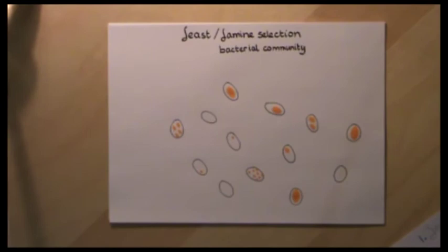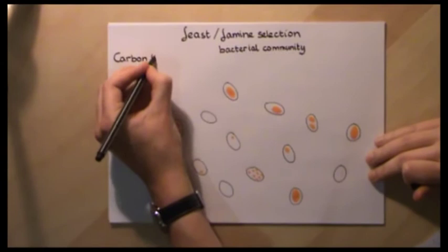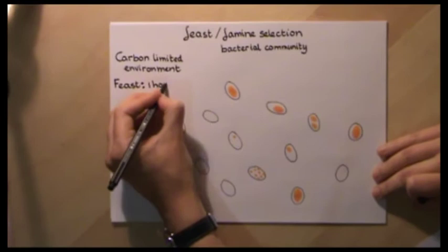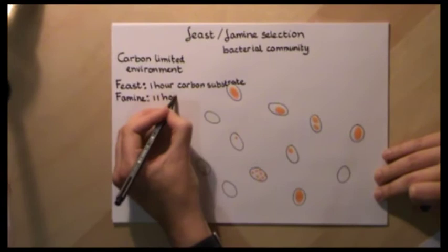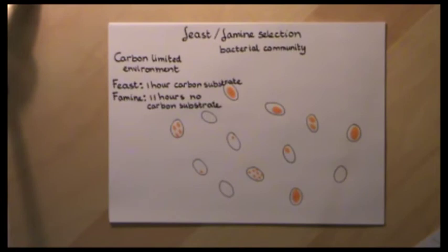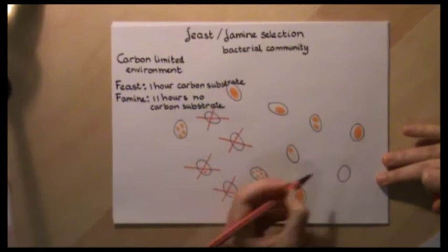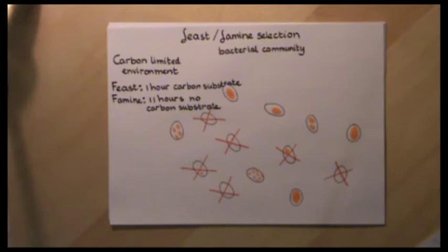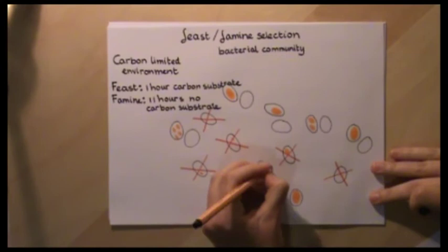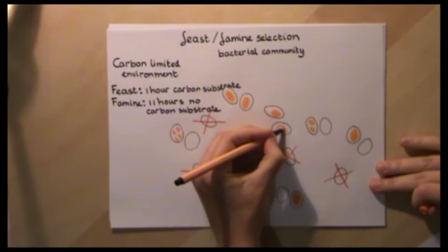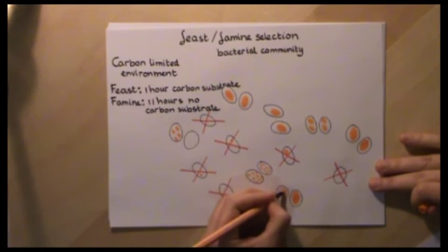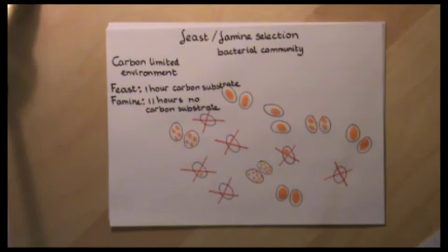In feast-famine conditions, the bacterial community is put in a carbon-limited environment. A carbon substrate is given for about one hour — called the feast — and after that there is a period of 11 hours without this substrate — the famine. In this way, competition between the bacteria is based on substrate uptake rate. Bacteria with the highest uptake rate can take up the most substrate in a short time, leaving less for others, and by storing it, survive the 11 hours of famine.